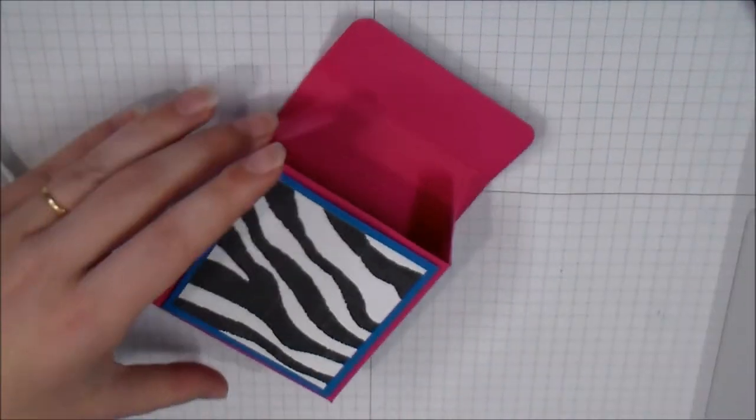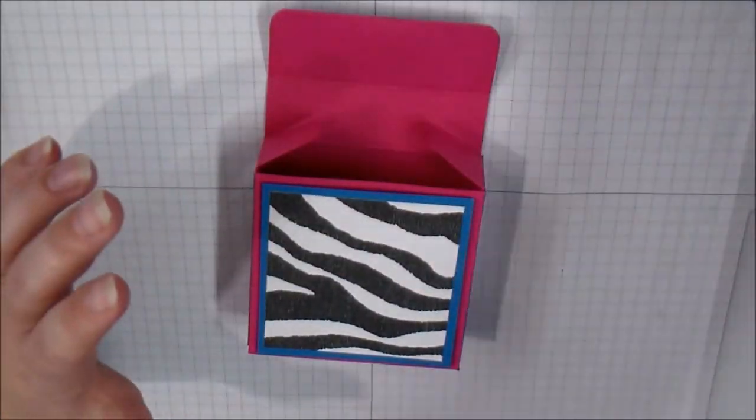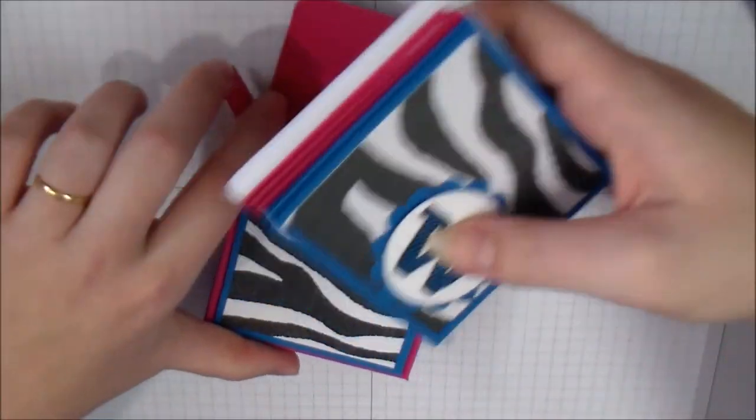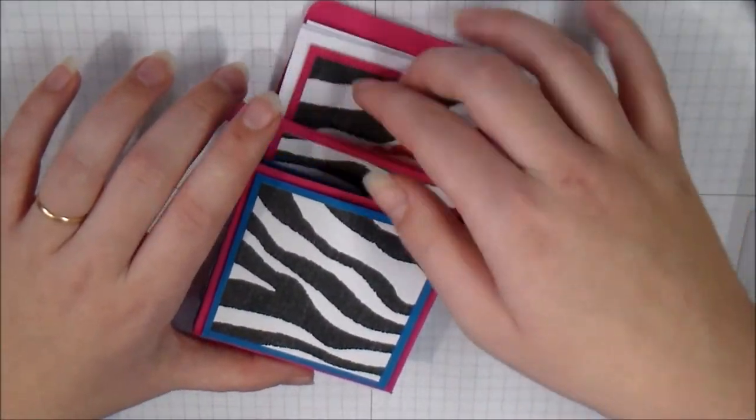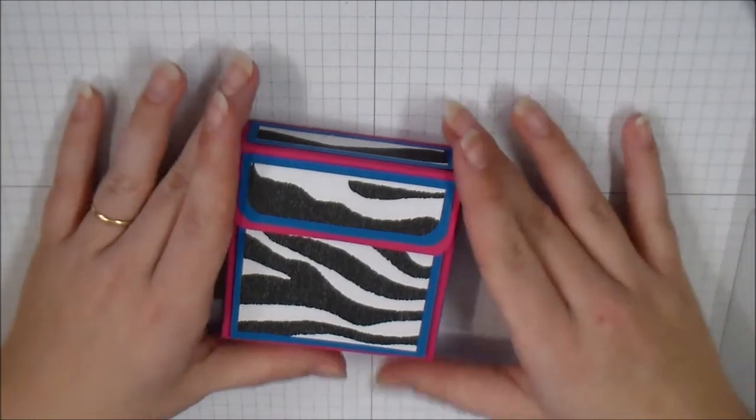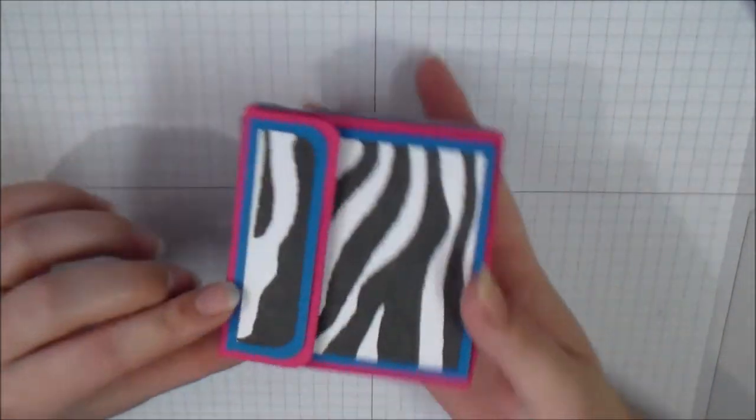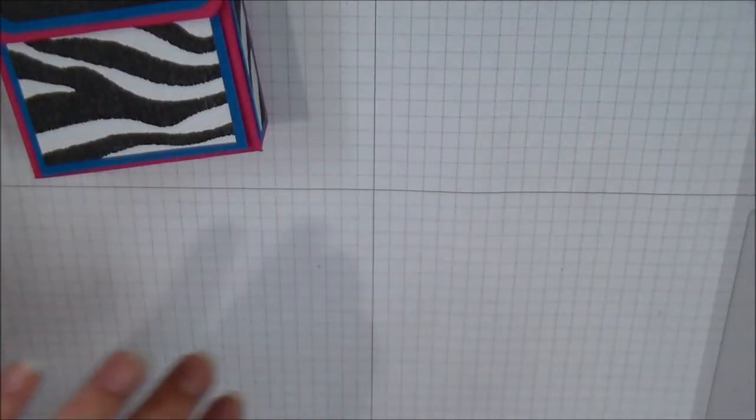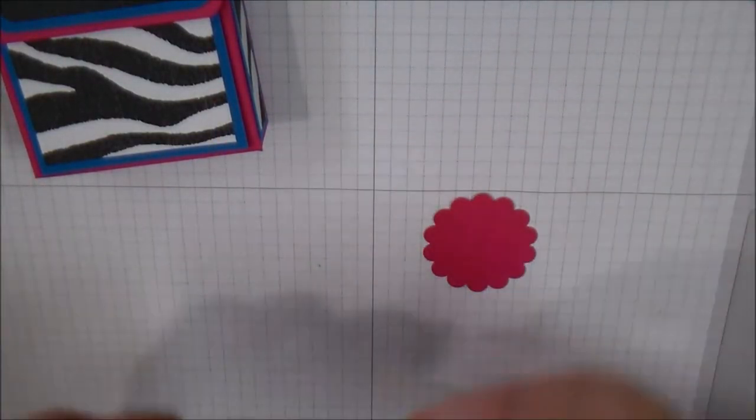I thought about adding a thumb hole and then decided against it. So now I'm going to put in my note cards. I made six of the note cards. They're decorated just like the box, half of them in Melon Mambo, half of them in Pacific Point. So obviously their envelopes and those six cards fit in nicely.